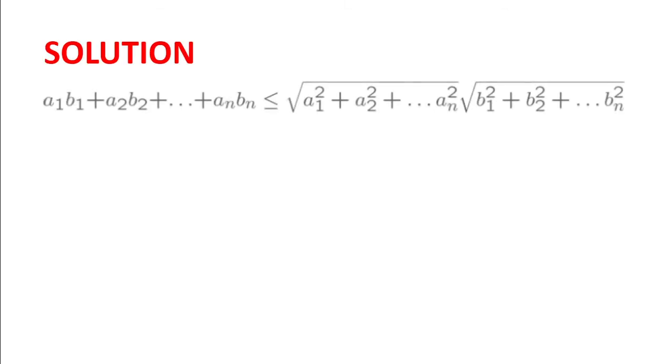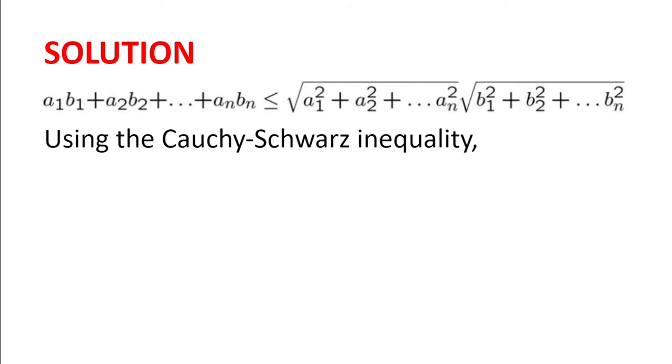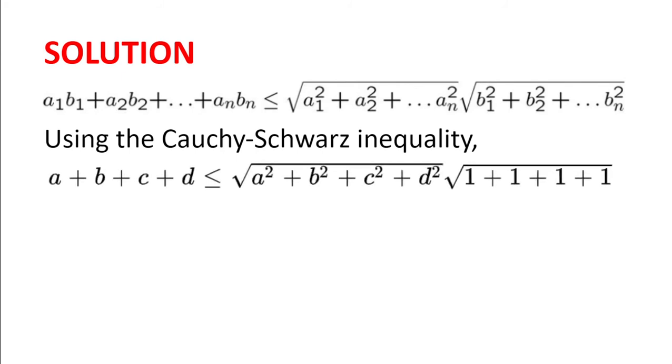Solution. So using the Cauchy-Schwarz inequality and substituting a1, a2, all the way to an with a, b, c, and d, and having b1, b2, all the way to bn being 1, 1, 1, 1, we get a times 1 plus b times 1 plus c times 1 plus d times 1 is less than or equal to the square root of a squared plus b squared plus c squared plus d squared, multiplied by the square root of 1 plus 1 plus 1 plus 1.